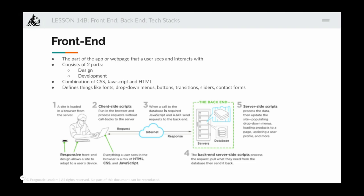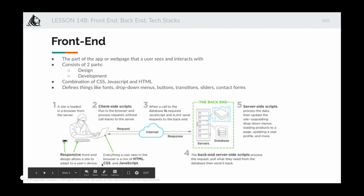The server determines this looks like an actual human and sends back the homepage HTML file. The server sends the file to the user; the browser receives and interprets the HTML, CSS, and JavaScript. The browser and website also understand the device — for example, a 13-inch computer — and resize images and fonts so everything fits and looks beautiful.